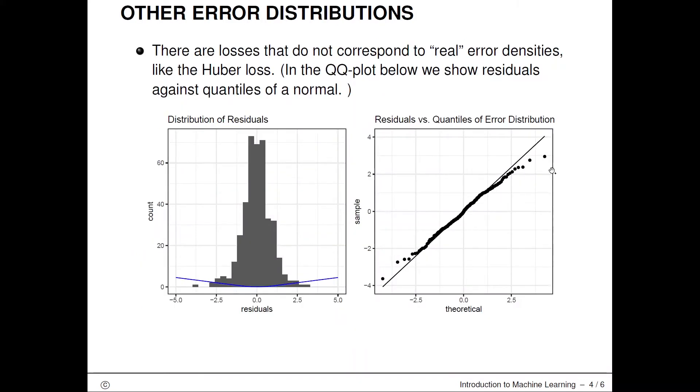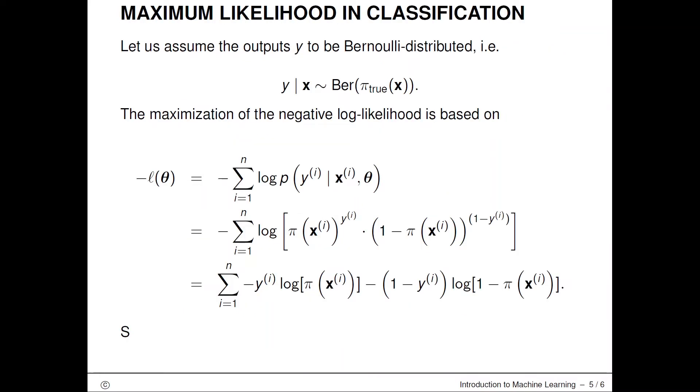In the Q-Q plot we show the residuals from optimizing this linear regression model with the Huber loss and compare that against the quantiles of the normal. I can't really give you a perfect distribution that we can compare to. We can't really derive a neat little formula for the distribution of the errors that would correspond to the Huber loss.